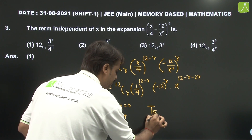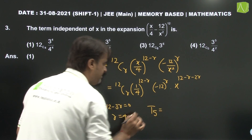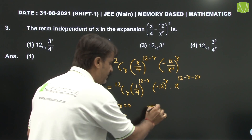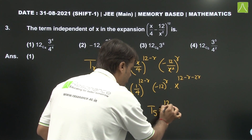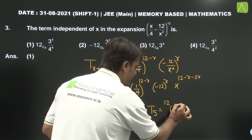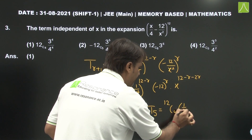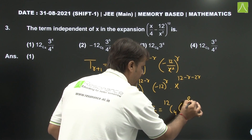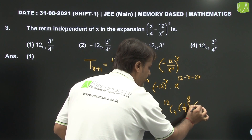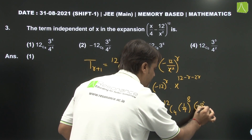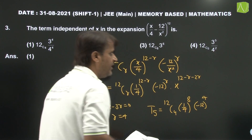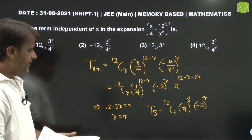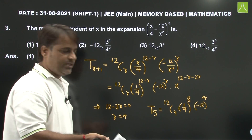So this will be the 5th term. Replacing values: 12C4 times (1/4)^8 multiplied by (minus 12)^4. Simplifying this gives us the answer. This was an easy question.